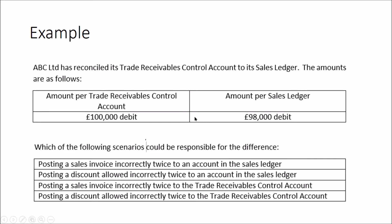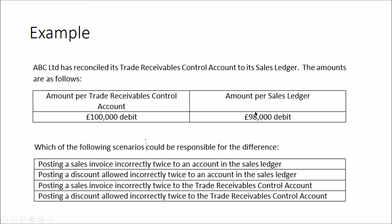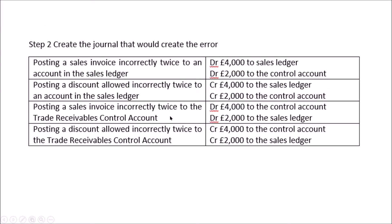If you're just told that one figure is bigger than the other without specific amounts, make up a number - say one is £100 bigger than the other - and work from that. Also remember that the exam question might include VAT, so you may need to understand its impact. For example, they might give you a net figure for a sales invoice and you'll need to gross it up. For step one, if the difference between the trade receivables control account and the sales ledger is £2,000, that's the figure you'll use.